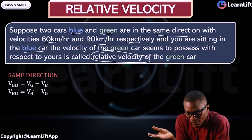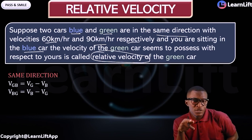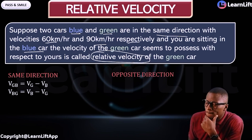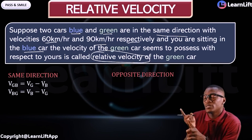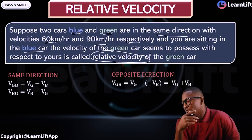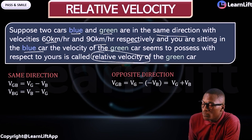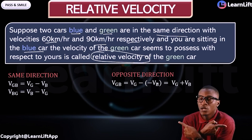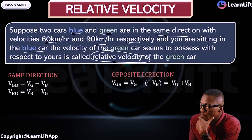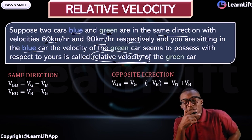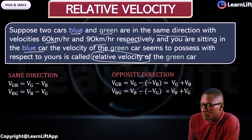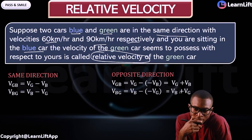When they are moving in the opposite direction, something changes. We still use the same formula, but the car moving in the opposite direction possesses a negative sign. So the relative velocity of green to blue becomes: velocity of green minus (minus velocity of blue), because the blue car is moving in the opposite direction. Minus minus becomes plus. So in the opposite direction, you add the velocities. Any way you do it — blue to green or green to blue — you still add. That's minus minus becoming plus.